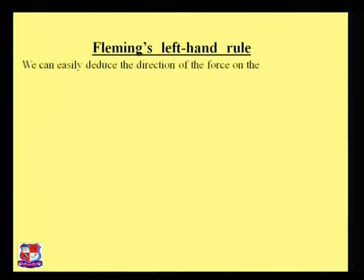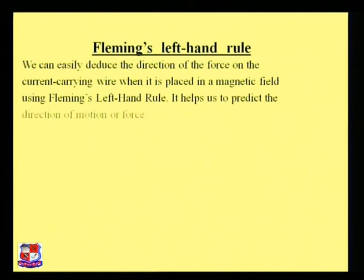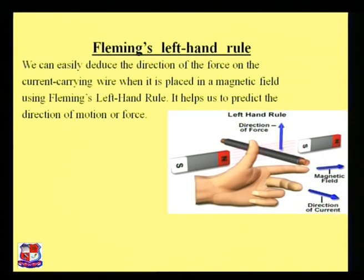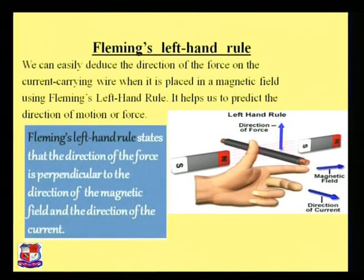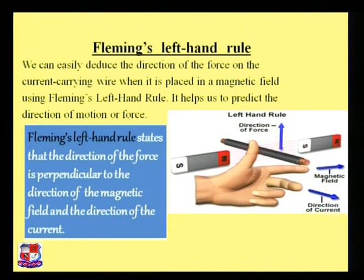Fleming's right-hand rule is used to find the direction of induced EMF. From the figure, we have the direction of force upwards and the magnetic field present. Fleming's left-hand rule states that the direction of force is perpendicular to both the direction of the magnetic field and the direction of the current. The figure shows magnets with the direction of force upward, from which the direction of current can be determined.